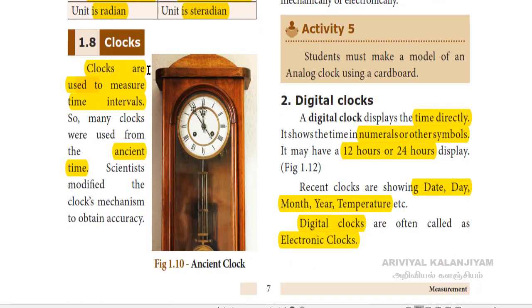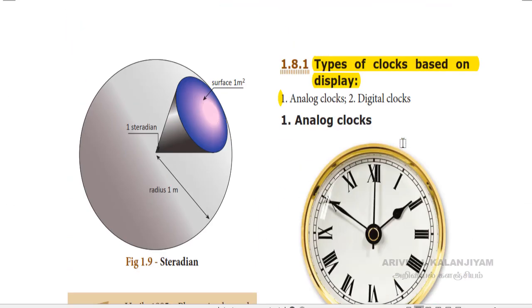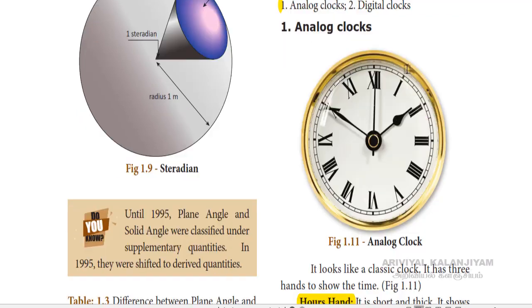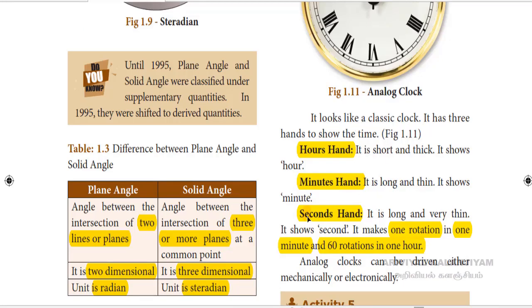Next one is clocks — that is, time. Clocks are used to measure time intervals. In ancient times, different instruments were used to measure time. Based on display, we can classify clocks into two types: analog clocks and digital clocks. First one is analog clocks.